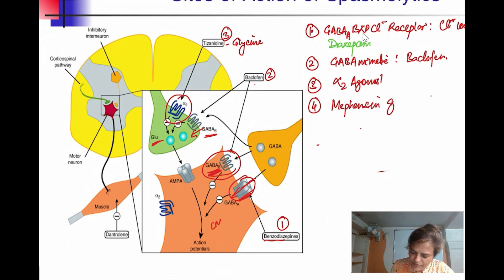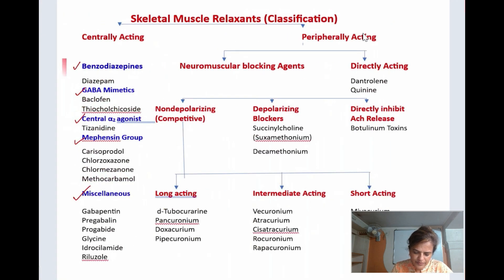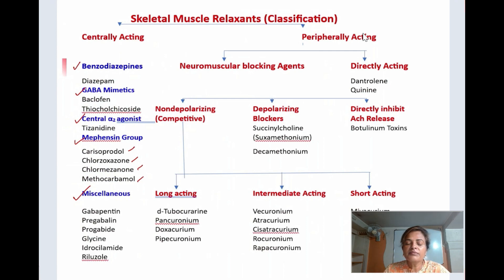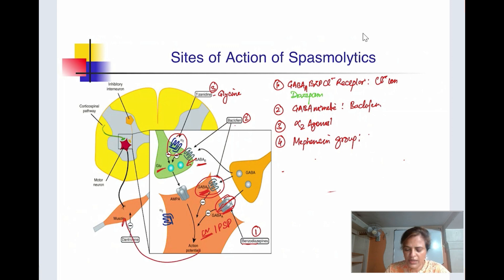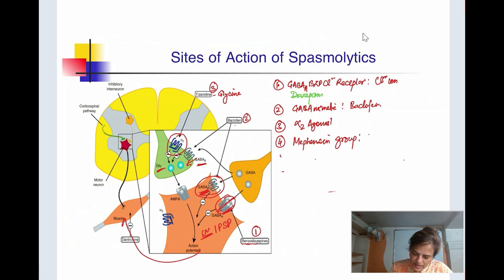The fourth group is the mephensin group, which acts non-specifically. Drugs include carisoprodol, chlorzoxazone, chlormezanone, and methocarbamol. They decrease sodium influx and calcium influx, generating inhibitory post-synaptic potentials. Some have sedative properties, some have hypnotic properties, and anticholinergic side effects are also seen with this group.